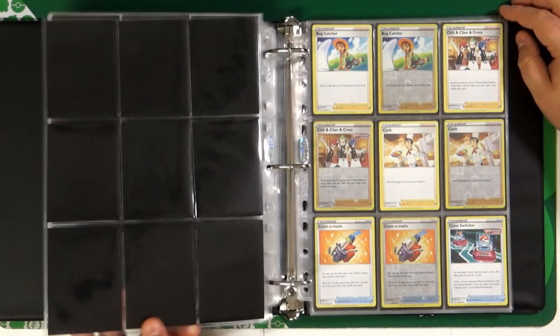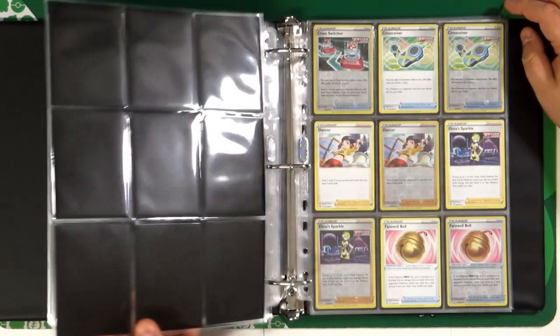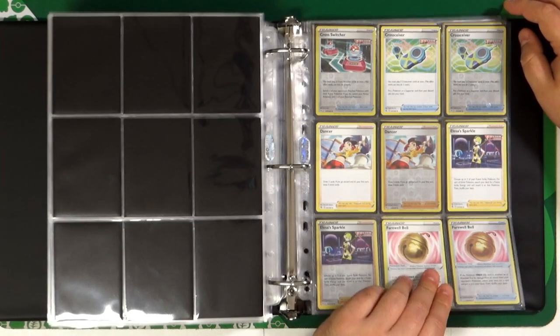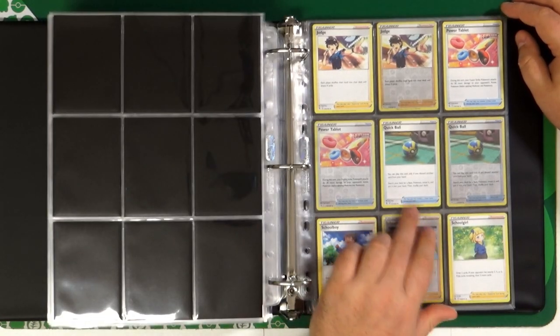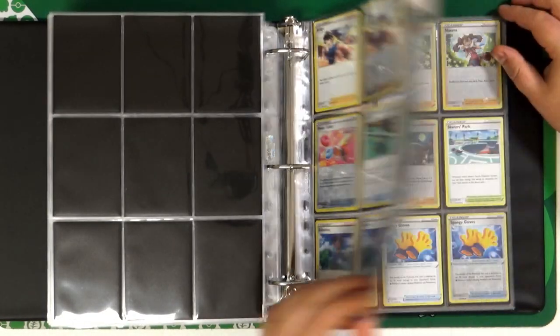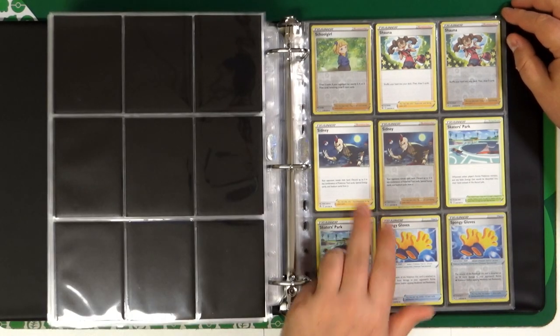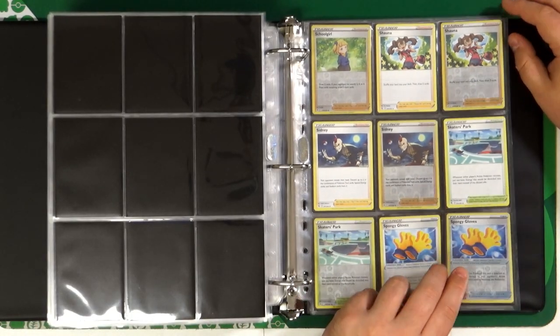Here we have some Trainer cards. Elesa's Sparkle, Battle VIP Pass, Quick Ball, Power Tablet, Shauna, one of the Unova Elite Four.